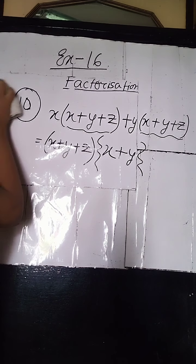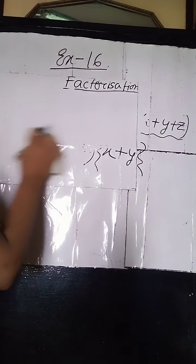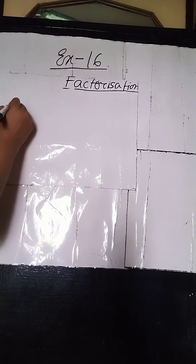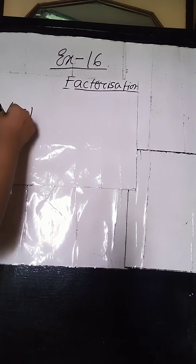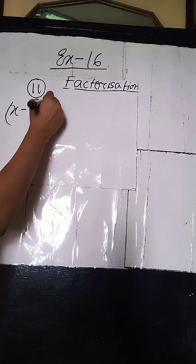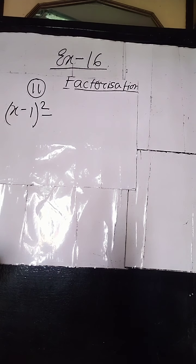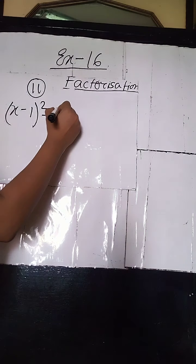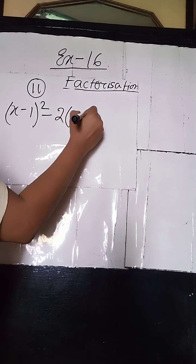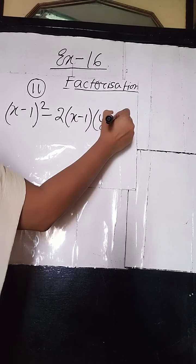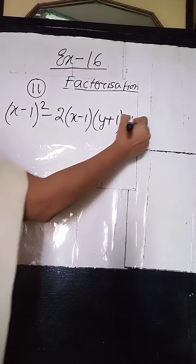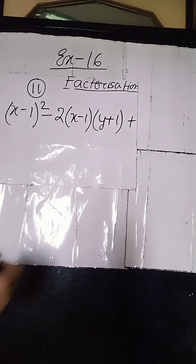Now we will move on to sum number 11 and sum number 12. In sum number 11, it is given: x minus 1 whole square, minus 2 into x minus 1 into y plus 1, plus y plus 1 whole square.